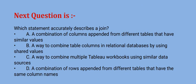Next question is: which statement accurately describes a join? Options are option A a combination of columns appended from different tables that have similar values, option B a way to combine table columns in relational databases by using shared values, option C a way to combine multiple table workbooks using similar data sources, and option D a combination of rows appended from different tables that have the same column names. The correct option is option A.